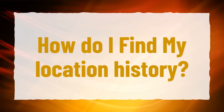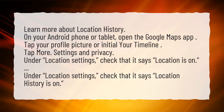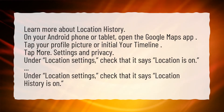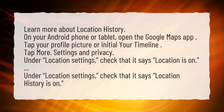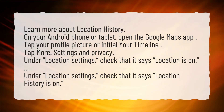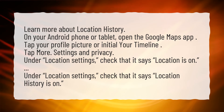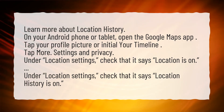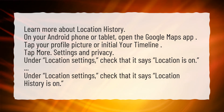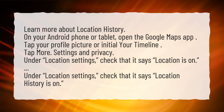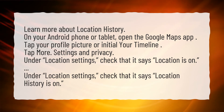How do I find my location history? On your Android phone or tablet, open the Google Maps app. Tap your profile picture or initial, then your timeline. Tap More, then Settings and Privacy. Under Location Settings, check that it says Location is on. Under Location Settings, check that it says Location History is on.